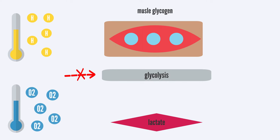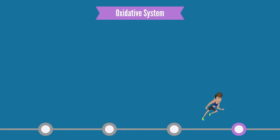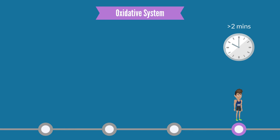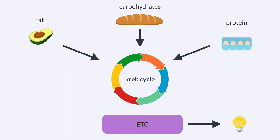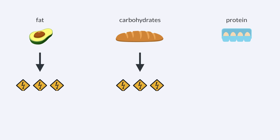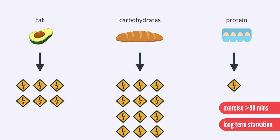The last system is the oxidative system, the primary source of ATP for long-duration, low-intensity activities. This system provides nearly all the energy for any exercise lasting longer than a few minutes. The oxidative system obtains energy from dietary protein, carbs, and fats to fuel exercise. These substrates go through two primary biological processes to produce ATP: the Krebs cycle and the electron transport chain. Carbs and fats, however, are the primary substrates. Protein does not provide a significant contribution unless you are training for longer than 90 minutes or during long-term starvation.